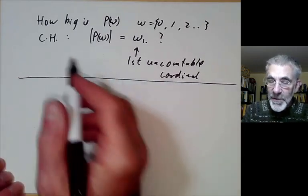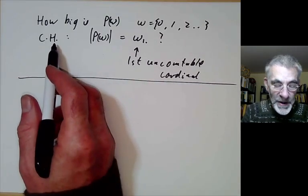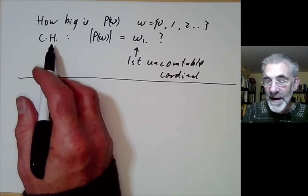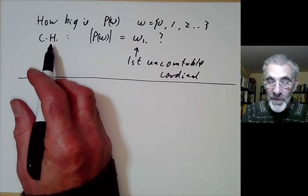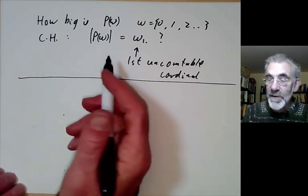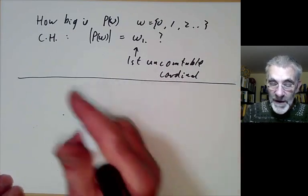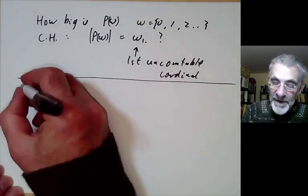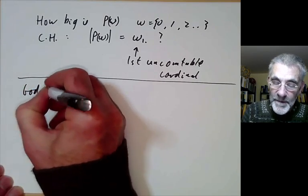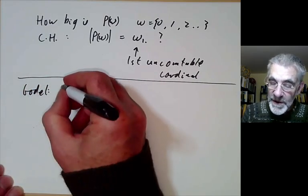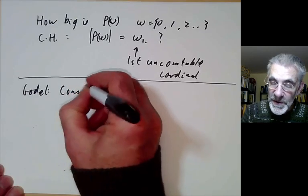So the continuum hypothesis is actually known to be independent of the axioms of set theory. So this was proved by Godel and Cohen and I'll just very quickly give a sort of vague idea of how they did this.